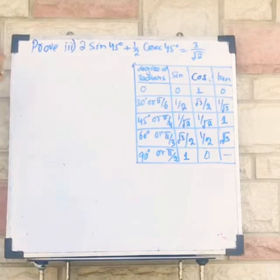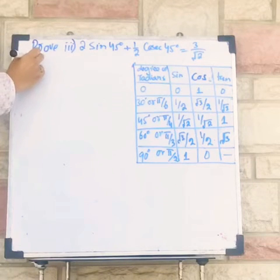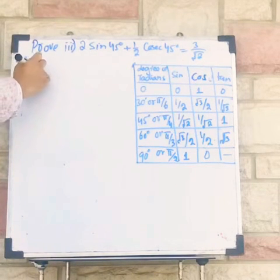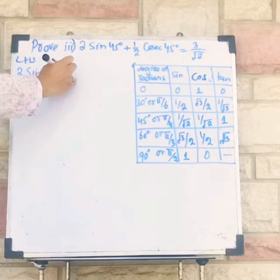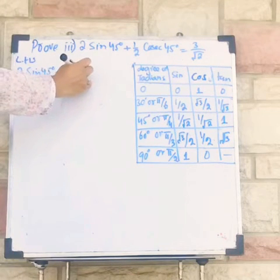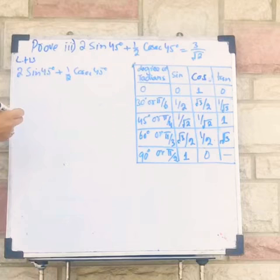Again, I have to consider left hand side which is equal to 2 sin 45 degrees plus 1 by 2 cosecant 45 degrees.